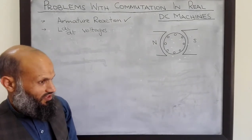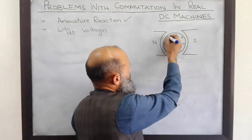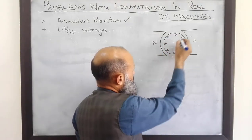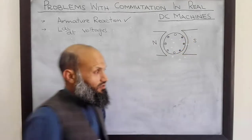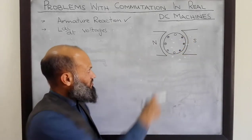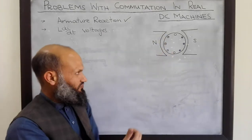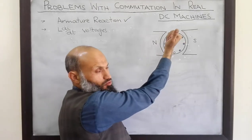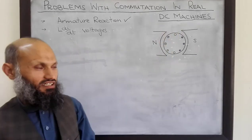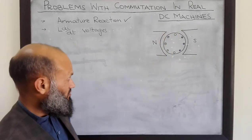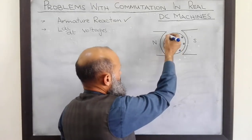Let's assume some direction of current in these conductors. Due to this current, there will be a magnetic field around the conductors. The direction of that magnetic field can be determined by the right-hand rule — that is, if the thumb indicates the direction of current, the fingers will indicate the direction of magnetic field around the conductors. So let's show the magnetic field due to these conductors.